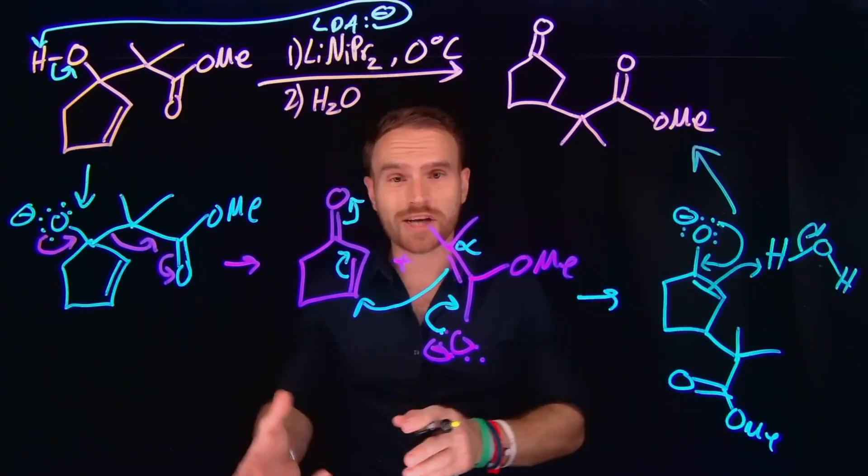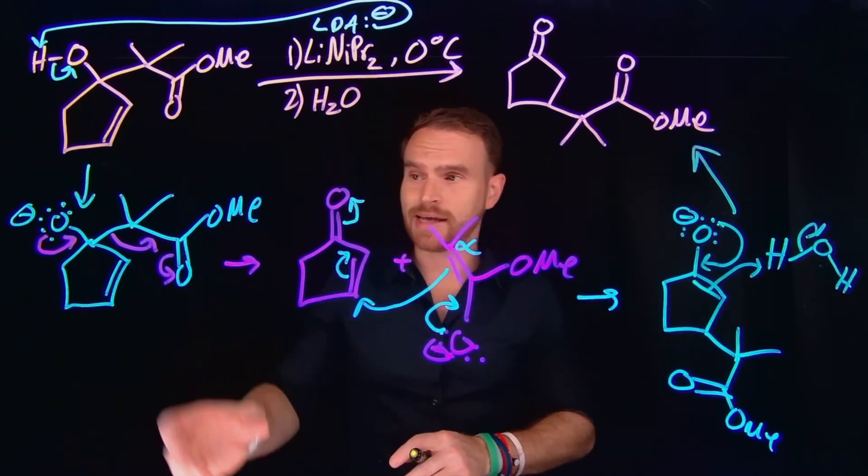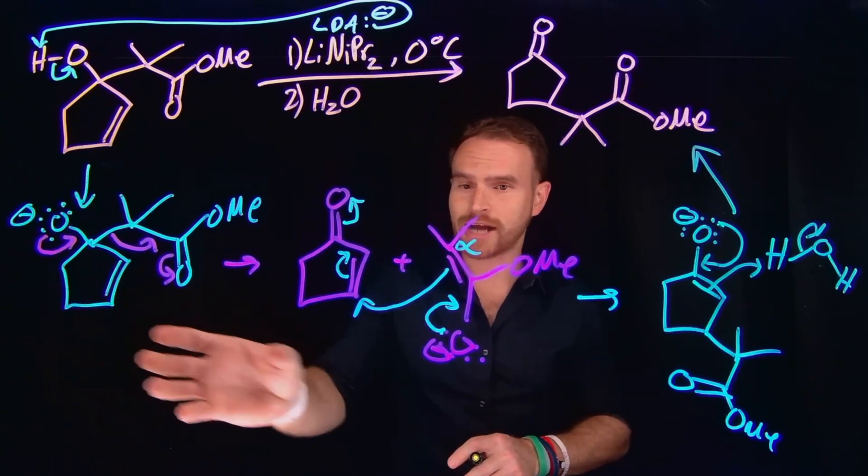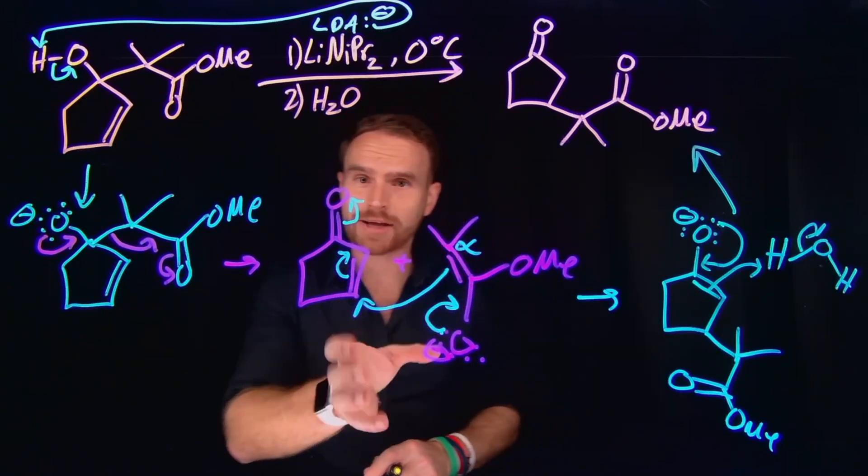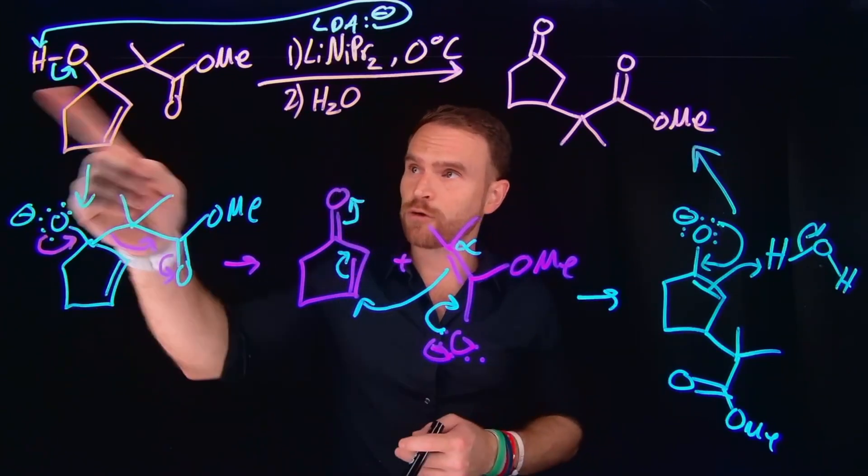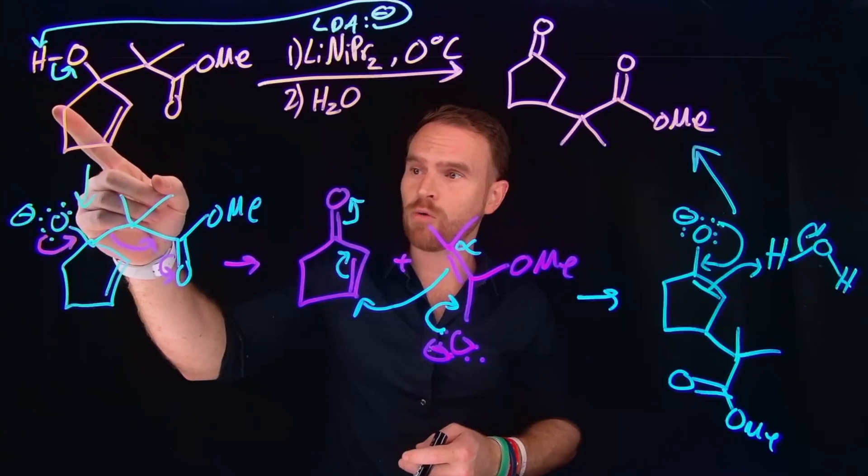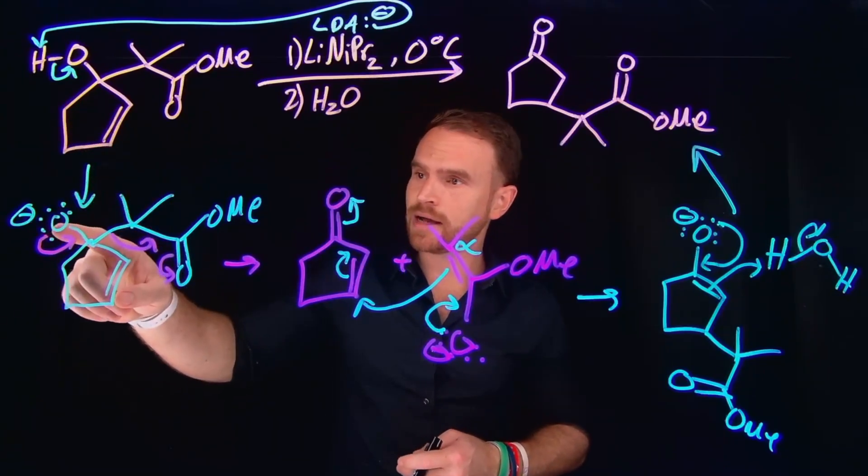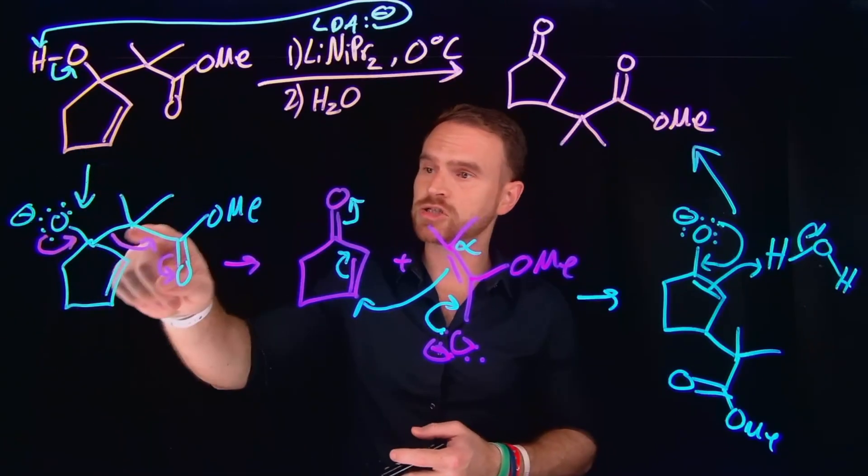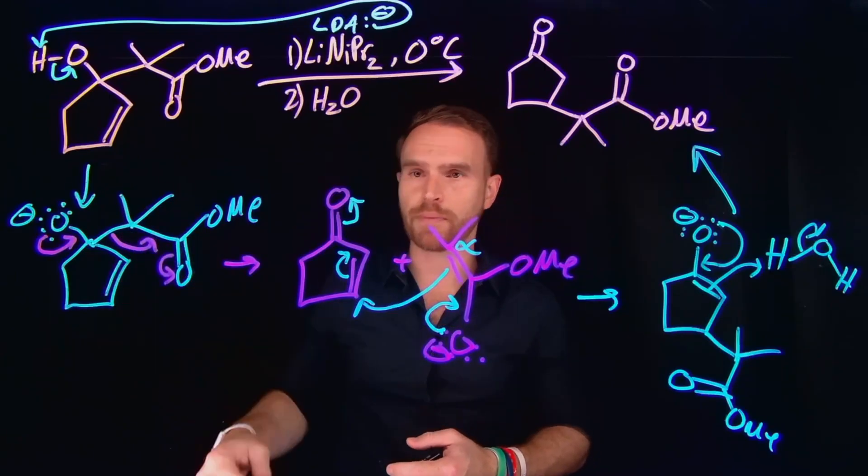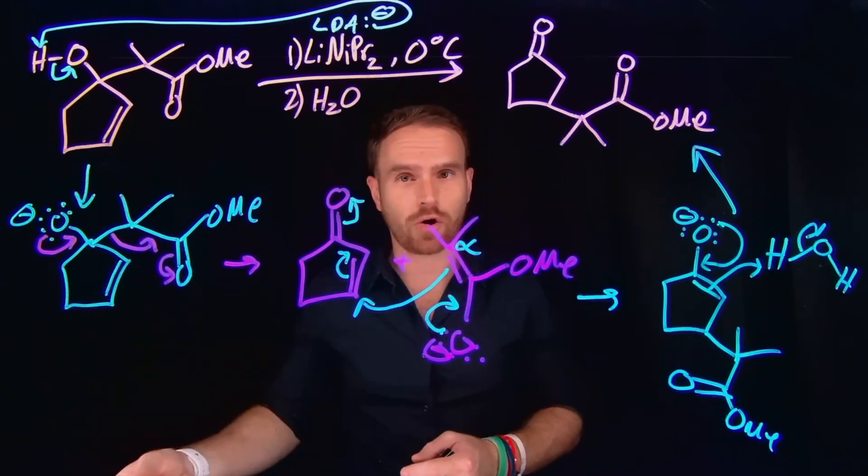And this is basically what's known as a retroaldol reaction that contains both the retroaldol reaction as well as a one, four Michael addition or conjugate addition. So the first step is to deprotonate our alcohol, which allows us to take these pi electrons and come down and form a carbonyl carbon, which is actually going to serve to break open this carbon carbon bond. And that is the retroaldol reaction.